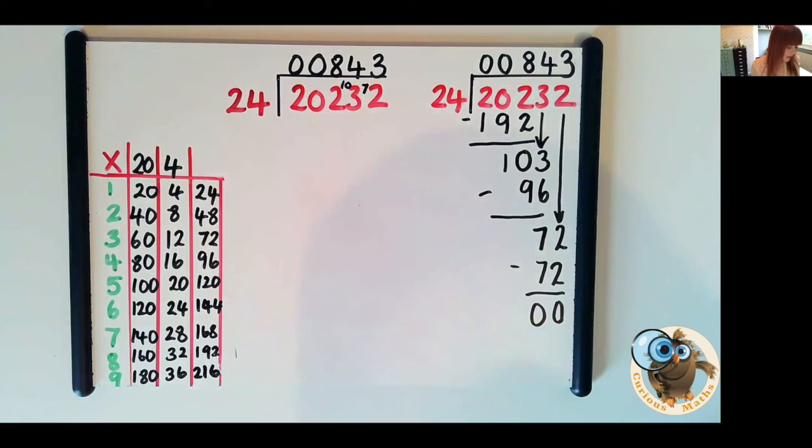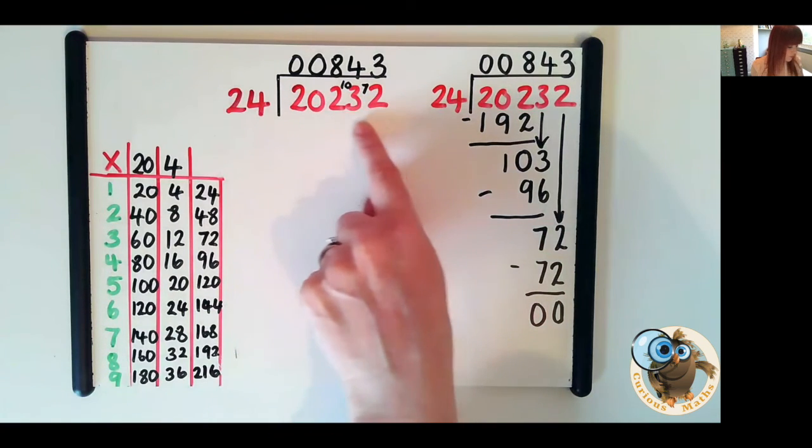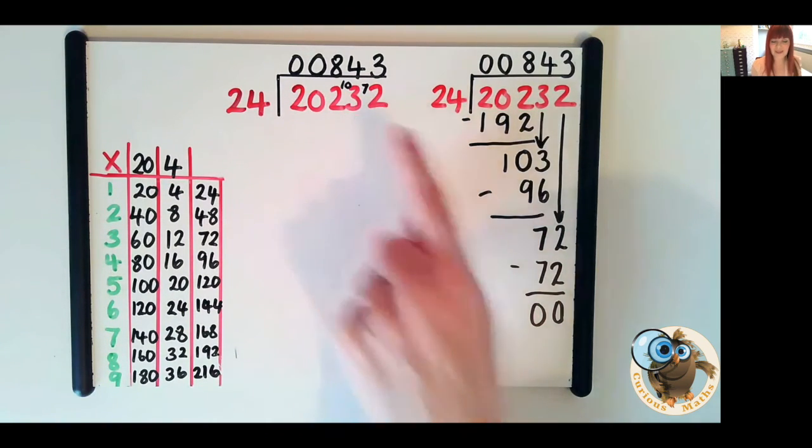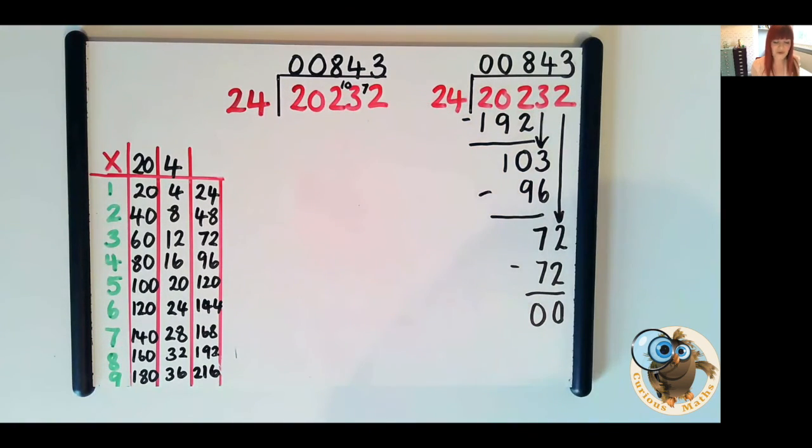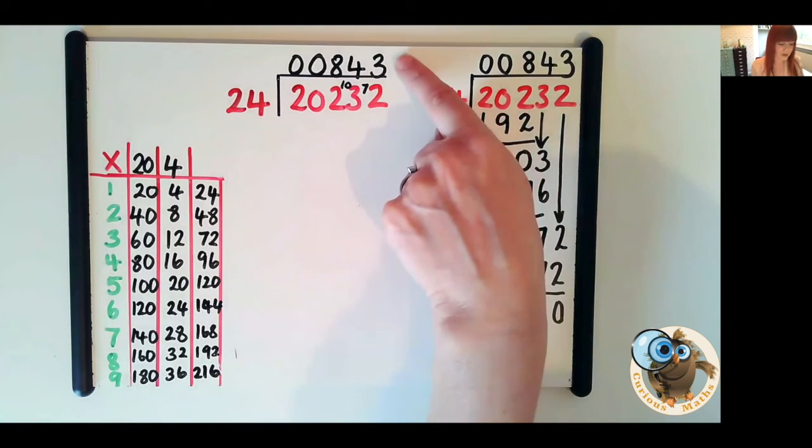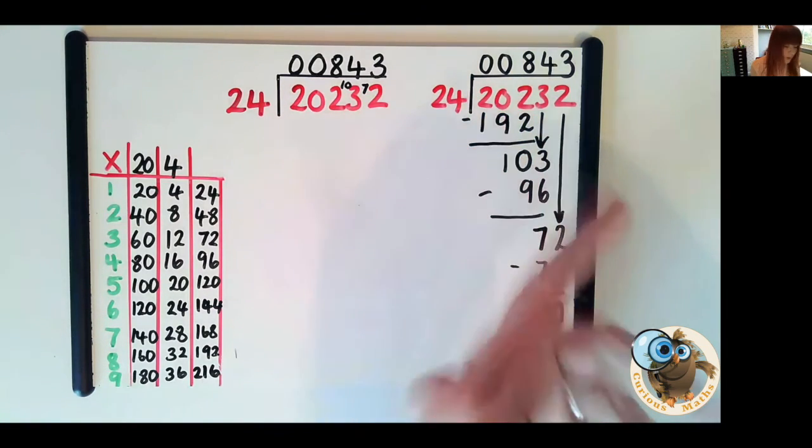The other thing to think about as well is getting them to notice that if you give them a number larger than 20,232, their answer is going to be bigger. And if you give them a number smaller, their answer is also going to be smaller. They sound very simple ideas, but it's that connection making. You could actually get them to estimate what they think the answer might be based on this question.